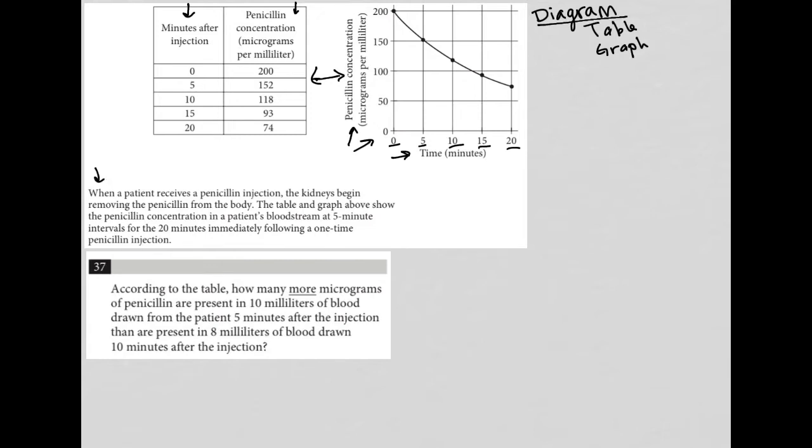So what we have here in the rest of the information before we read the question, it says when a patient receives a penicillin injection, the kidneys began removing the penicillin from the body. The table and graph above show the penicillin concentration in a patient's bloodstream at five minute intervals for the 20 minutes immediately following a one-time penicillin injection. So we see that the amount of penicillin is being decreased by the kidneys over time after the injection. That's what both the graph and the table tell us.